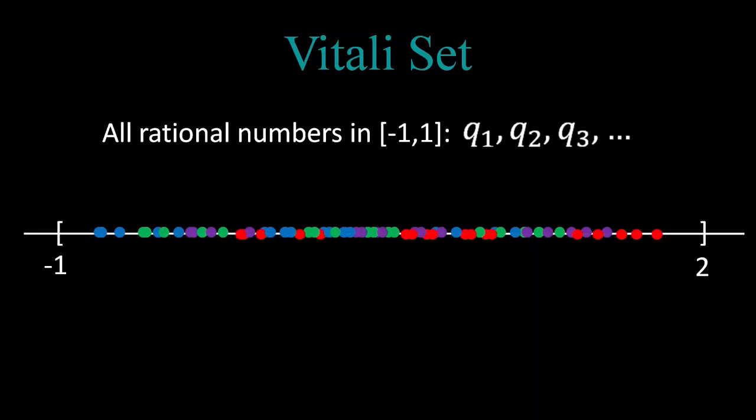One thing you'll notice is that this union must lie in the interval from minus 1 to 2, because we only shift our Vitali set at most by 1 unit to the left or right. Another observation that is slightly trickier is that every real number in the interval 0 to 1 must appear in the union.